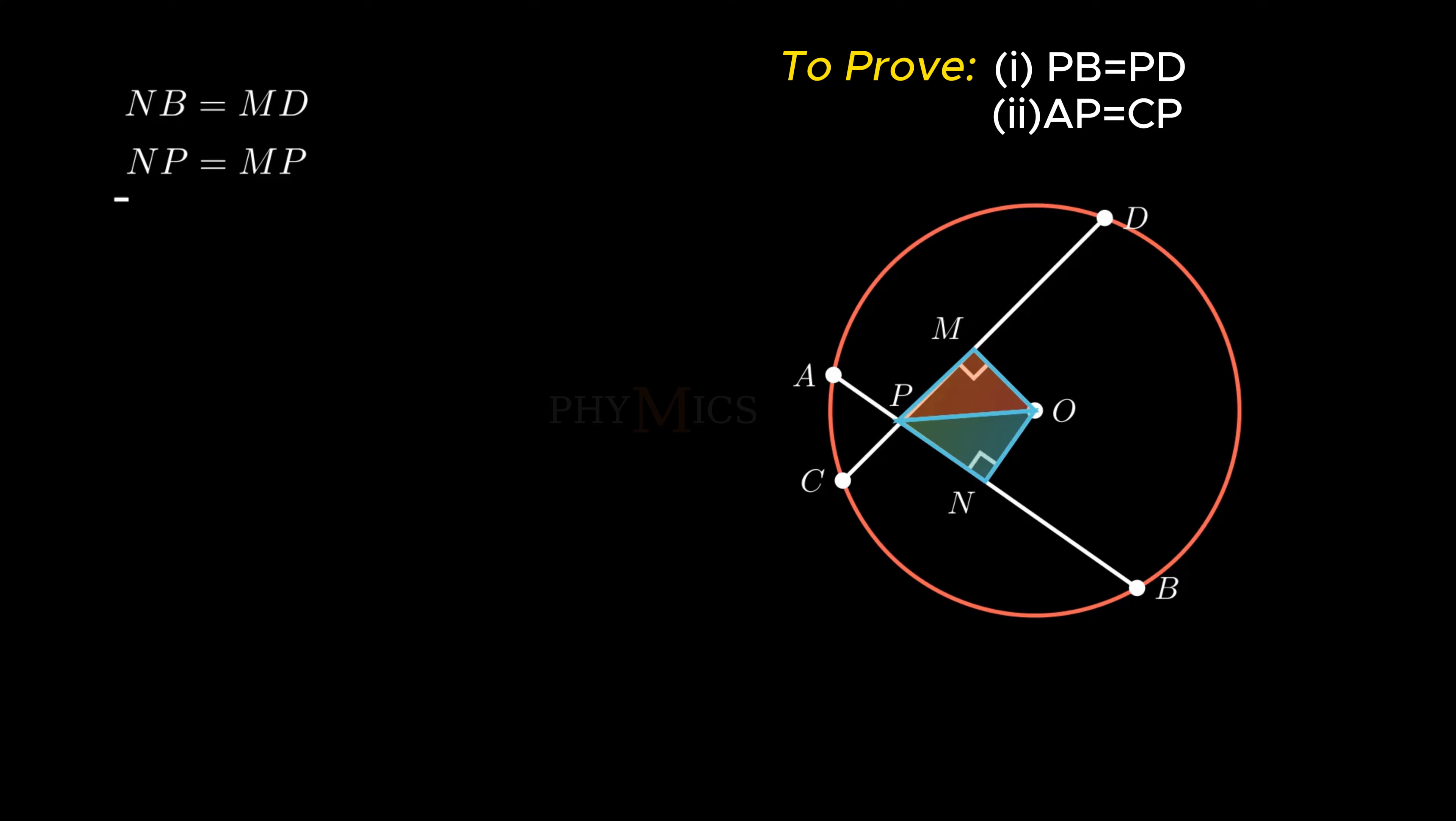Now, on adding these two equations, we get sum of segment NB and NP is equal to sum of segments MD and MP, which becomes major segment PB equals major segment PD.